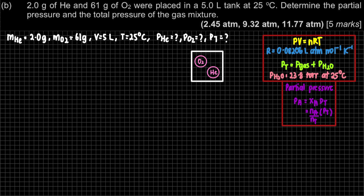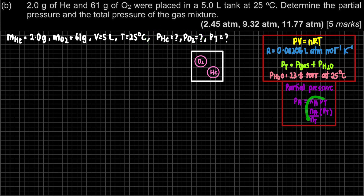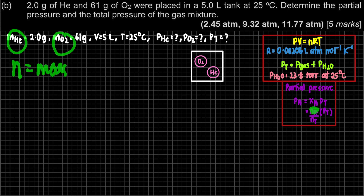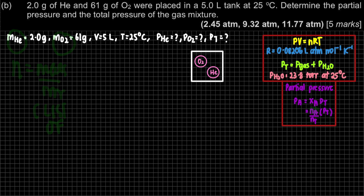The question asks for the partial pressure of each gas, so we use Dalton's Law. The partial pressure formula is: P_A = X_A × P_total, where X_A is the mole fraction — that is, the mole of your specific gas divided by the total moles. Before finding partial pressure, we first need to find the number of moles of each gas. Since we have mass, we can find moles using: number of moles = mass ÷ molar mass. Refer to your list of constants for molar mass.